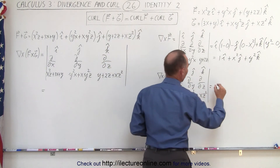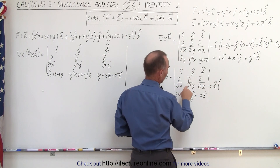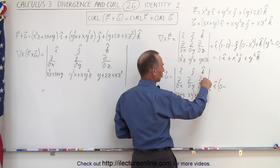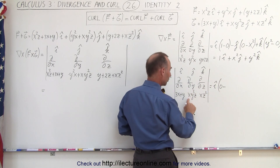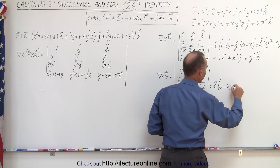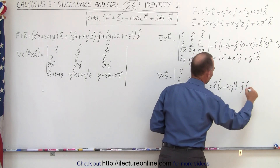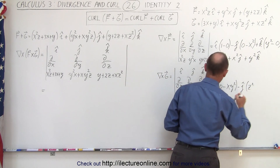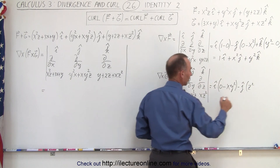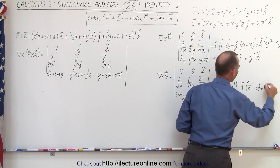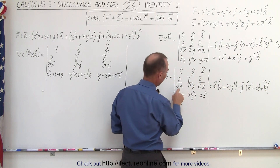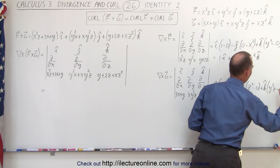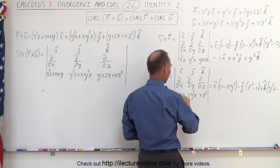So that's the curl of the first vector field. We'll do the same for the second. So we get i times the partial with respect to y of xz squared, which is 0, minus the partial with respect to z of xy squared z, so that would be xy squared. Minus the j component times the partial of this with respect to x, which is z squared, minus the partial with respect to z of this, which is 0, and plus the k component. The partial of this with respect to x, which is y squared z, minus the partial of this with respect to y, which is 1.